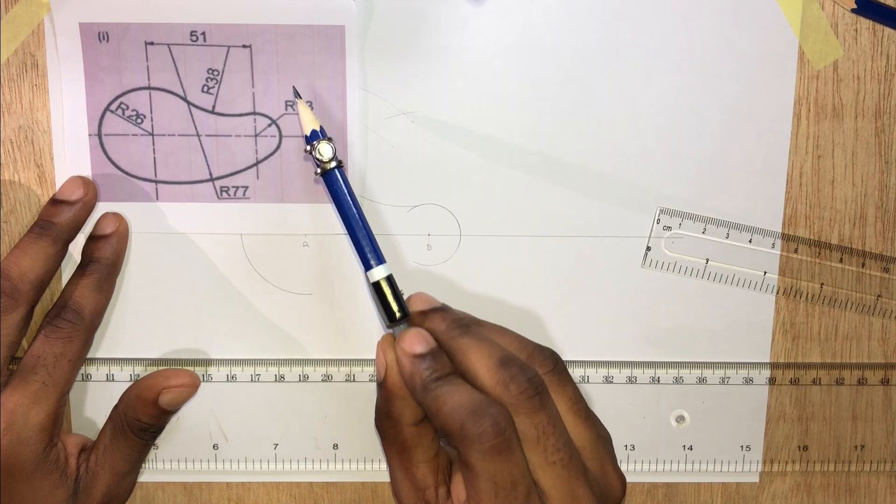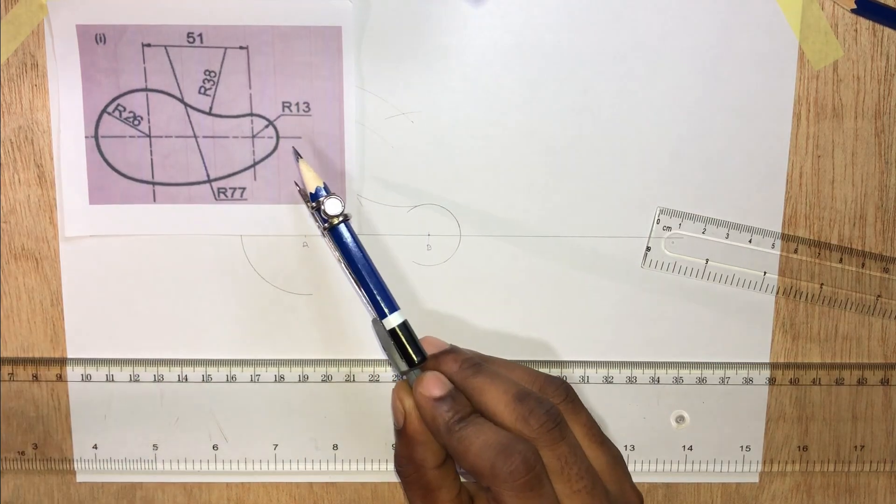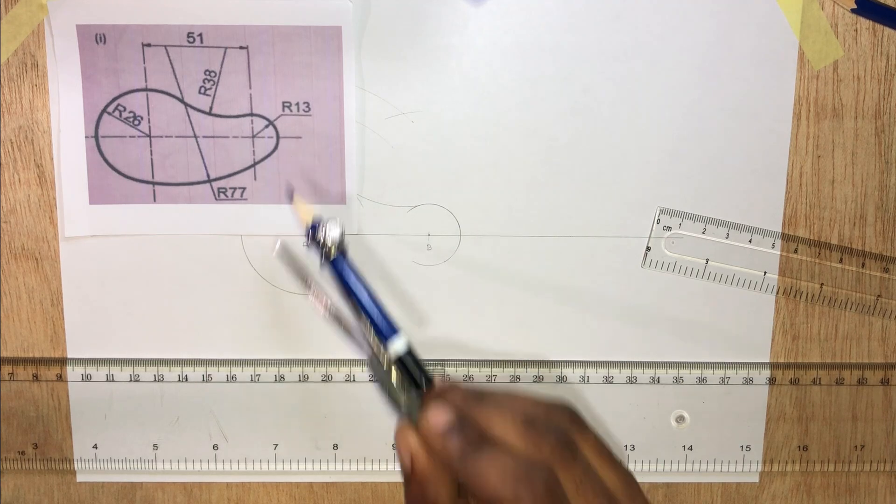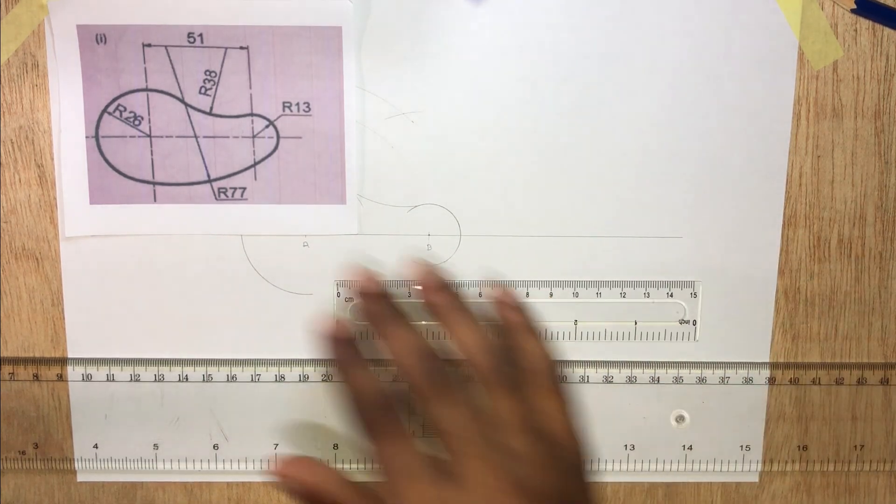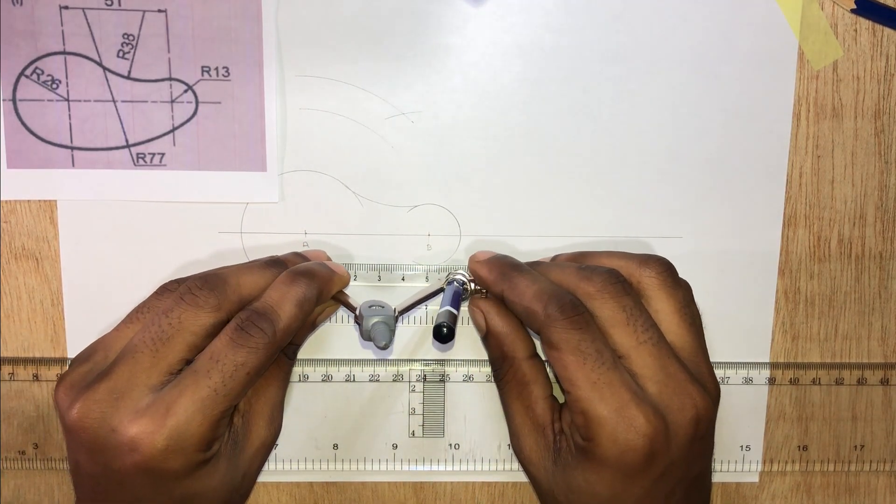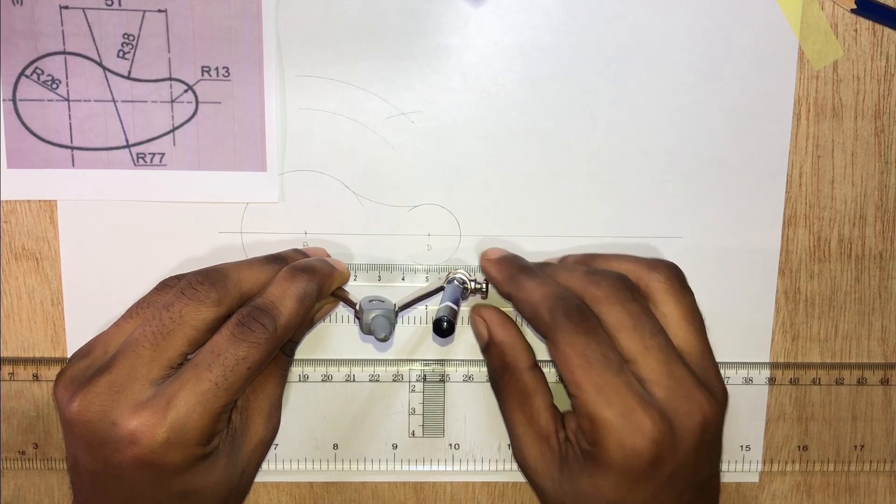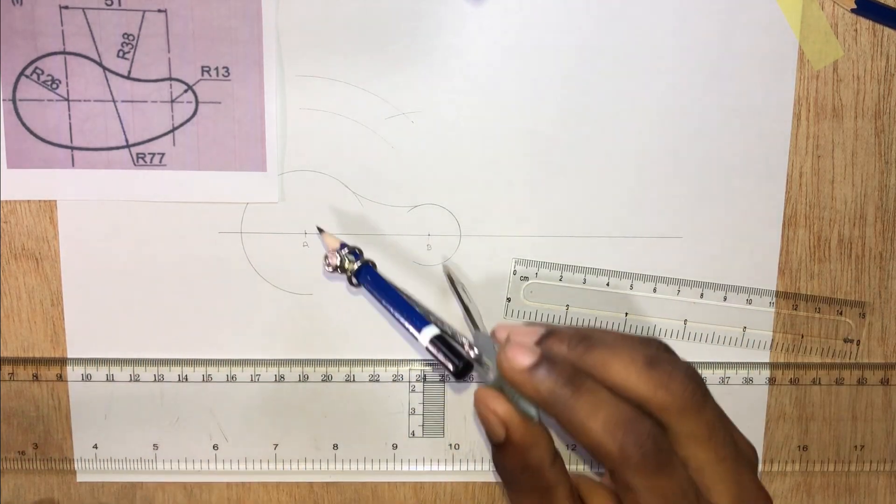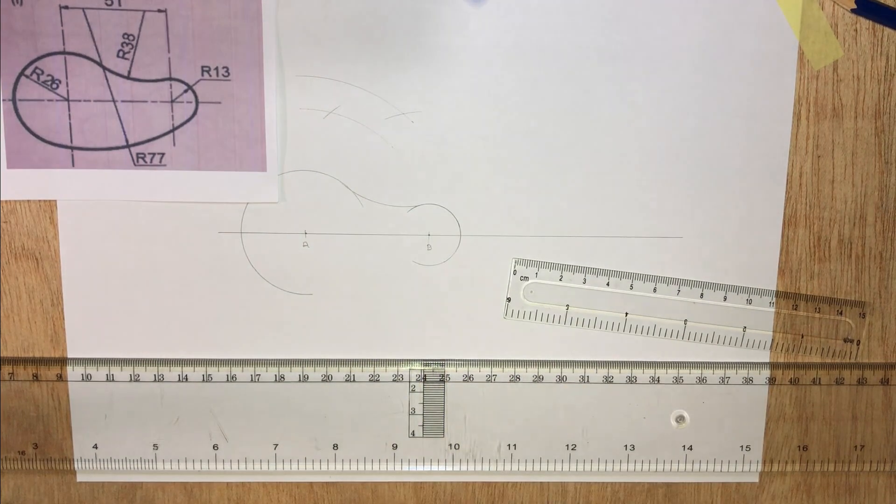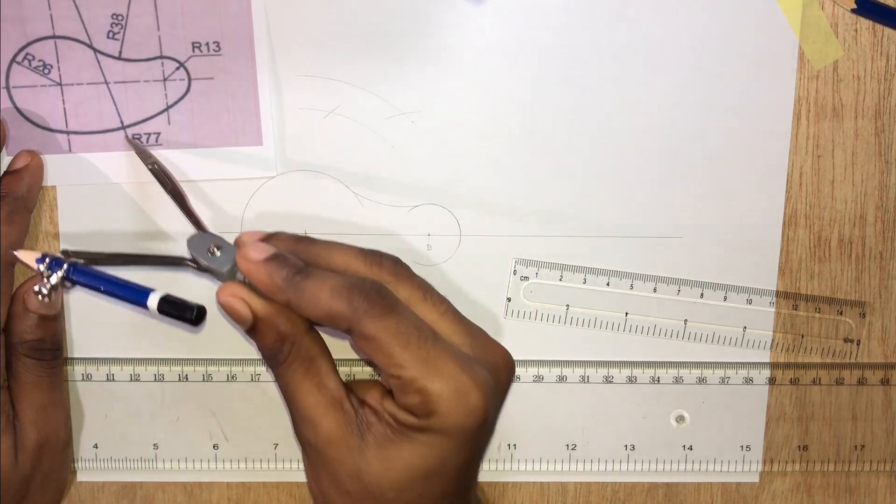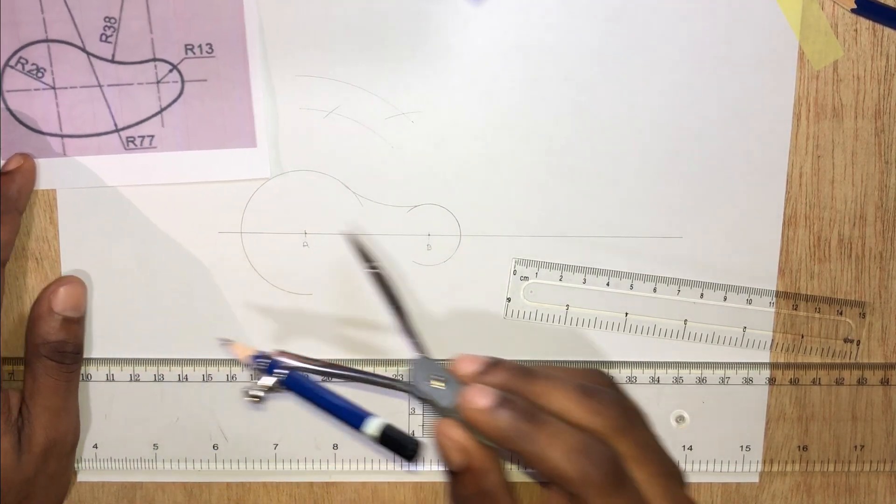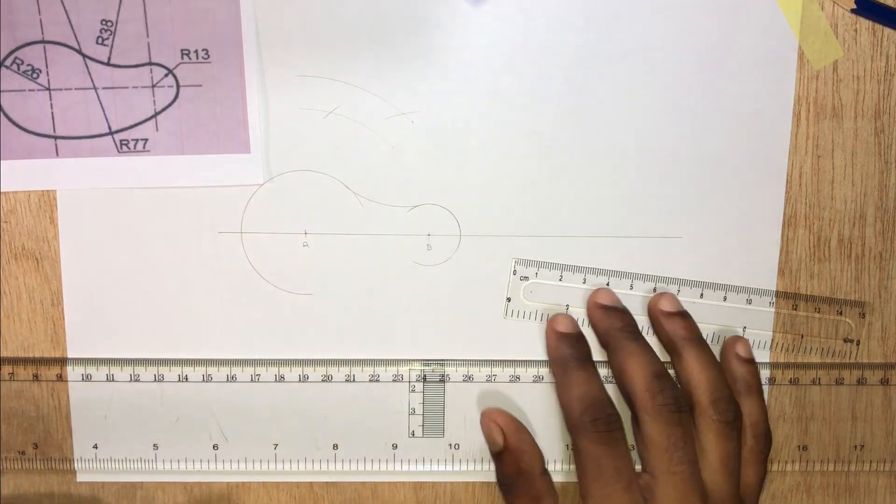77 minus 13. Now let's draw that circle. That part of the circle that touches these two circles. Radius 77 millimeters.